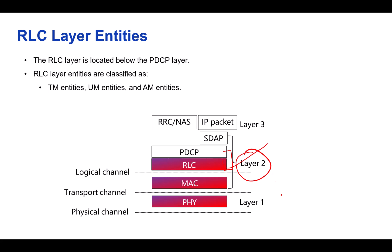The main functions of RLC include a few key operations. The first function is error correction, and this only happens in AM mode. In Acknowledged Mode, RLC uses a system of confirmation and retransmission to ensure that all data arrives correctly, and this method uses the ARQ process.